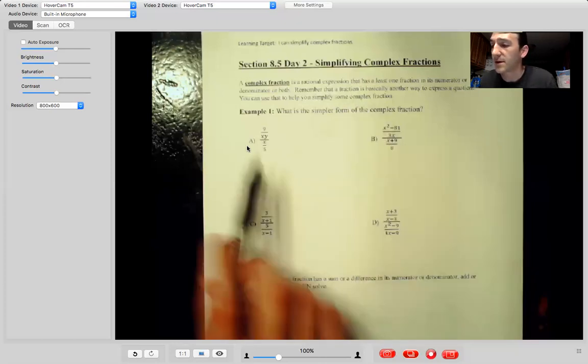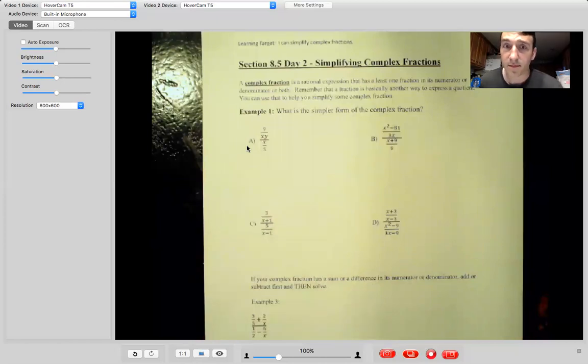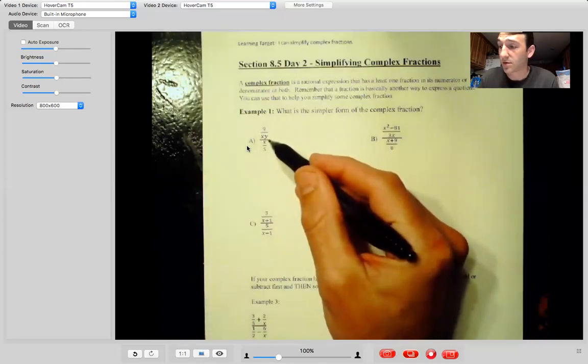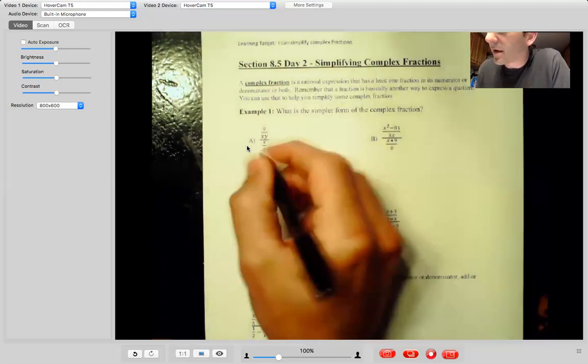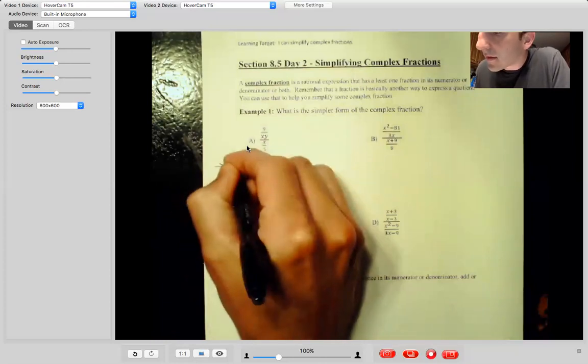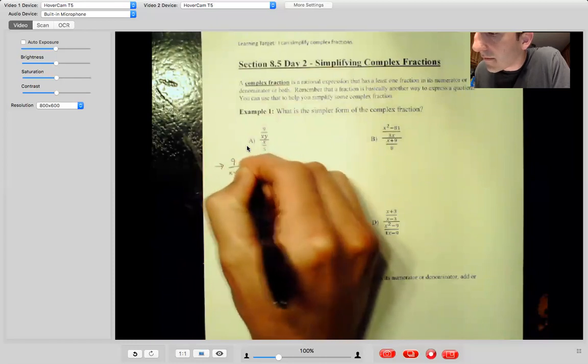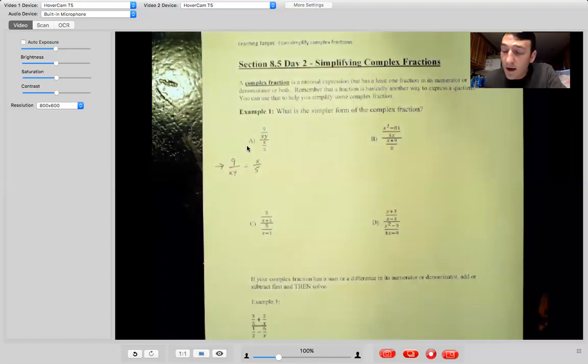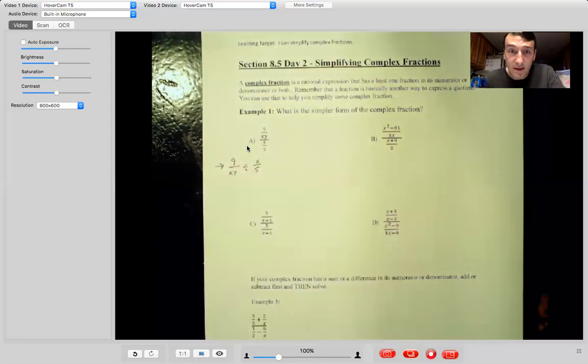The learning target for this is that I can simplify complex fractions. And so with that, we'll just go ahead and get into it. First of all, what is a complex fraction? Well, there's a definition right here, but basically it's just a fraction over a fraction. So remember what's a fraction bar actually mean? It means division. So it's just nine over XY divided by X over five. Same problem, just written in a different way.